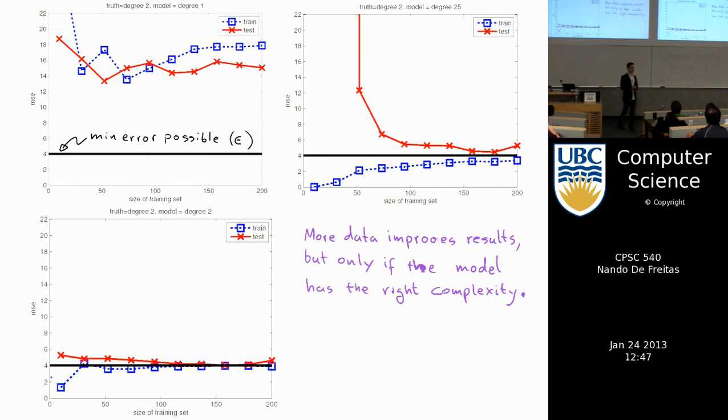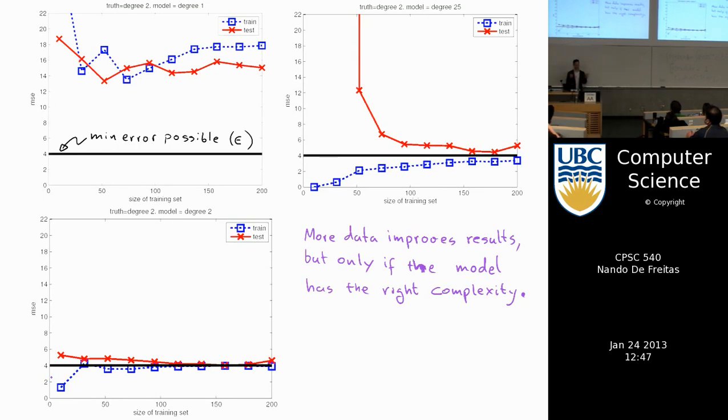Right now, the game being played in AI — at least in perception, understanding objects and speech — is the game of data. Google is trying to get as much data as possible for speech and image recognition, while building models as large as possible. A lot of the focus in the Google Brain project is about using many cores to run the algorithms we discuss in this class at scale — not new algorithms, just a question of scale.